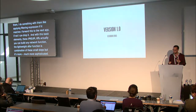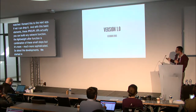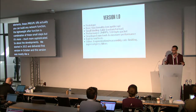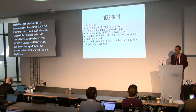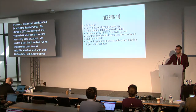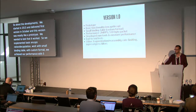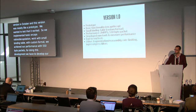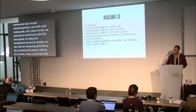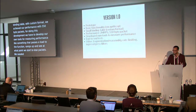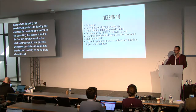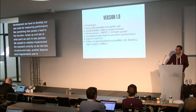About the development: we started in 2015 and delivered the first version in October. This version was mostly a prototype — we wanted to test that it worked. We implemented basic encapsulation and decapsulation, working with a small binding table in a custom format. We achieved a performance of 2 million packets per second with 550-byte packets. For this development we had to build our own tools for measuring performance — something that passes a load to the function, ramps up, and sees at what point packets are lost. We also had lots of end-to-end tests to validate correct standard implementation. Other features included fragmentation and reassembly, rate limiting, and ingress/egress filters.